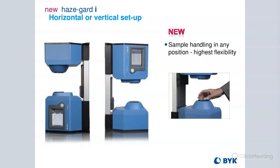With a vertical setup option: with the previous generation, our HazeGuard Pluses could only be oriented horizontally. This one can actually be oriented both ways — horizontally or vertically — and you can change back and forth. The benefit is that you could lay the sample down on the port instead of having to hold it in place vertically. This is particularly good when you have very small samples that are just a little bit bigger than the aperture port in the HazeGuard, so you can just sit the sample on the port instead of worrying about your fingers getting in the way of the light beam.